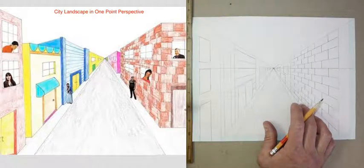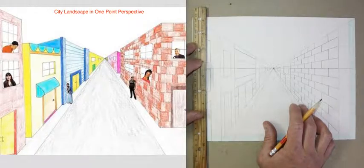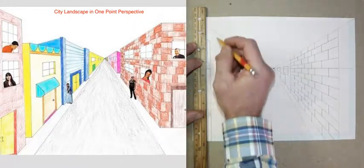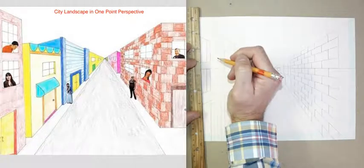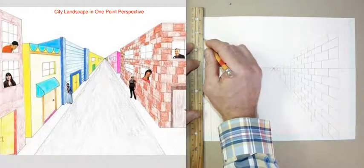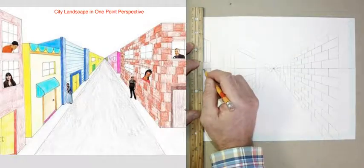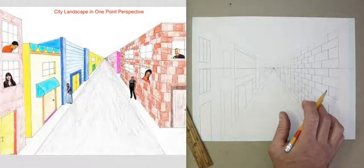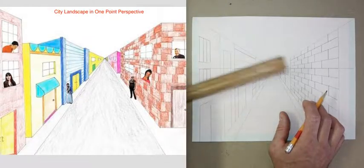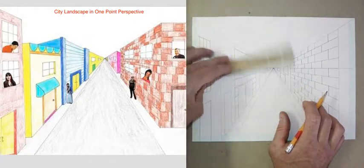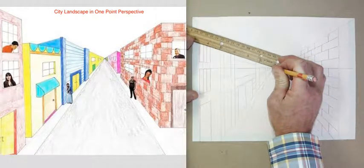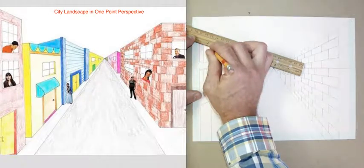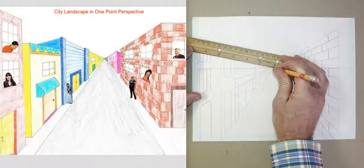Now those windows clearly have panes of glass in them — that means they're divided. So I'm going to use the lines on the graph paper again. I made each window three blocks on the graph paper wide, so I'll space that out and add a line on each set of blocks. That gives me my vertical panes. I need to add in some lines for my horizontal panes, and I'm going to anchor that with my pencil on the vanishing point.